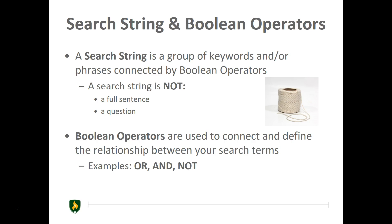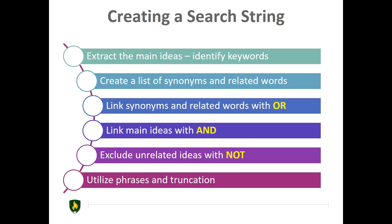A search string is NOT a full sentence or question. There are six steps to creating a search string: extract the main ideas and identify keywords; create a list of synonyms and related words; link synonyms with OR; link main ideas with AND; exclude unrelated ideas or unwanted terms with NOT; and utilize phrasing and truncation to narrow or broaden the number of results.